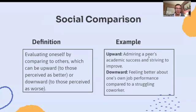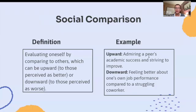Social comparison is evaluating oneself by comparing to others, which can be upward — to those perceived as better — or downward — to those perceived as worse. Upward example: admiring a peer's academic success and striving to improve. Downward example: feeling better about one's own job performance compared to a struggling co-worker.